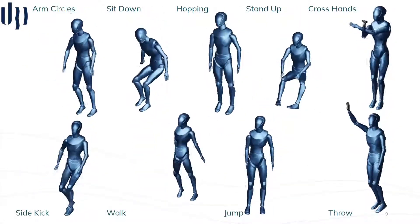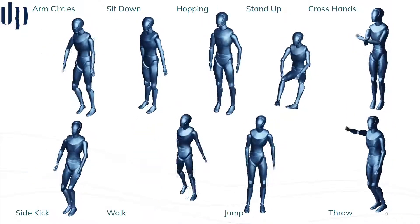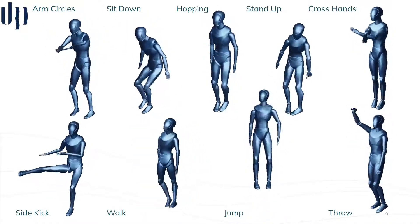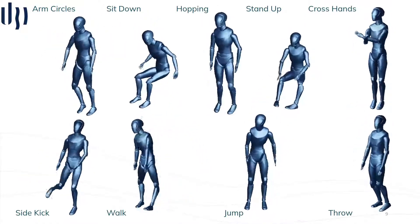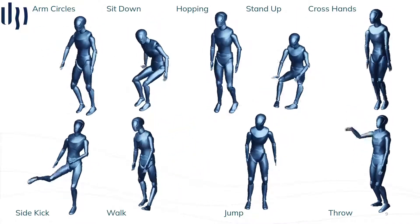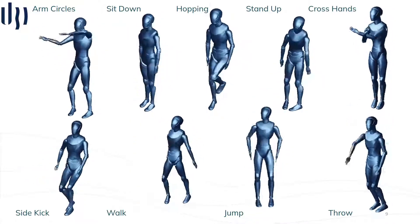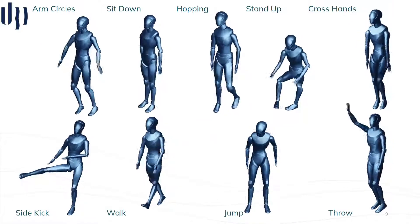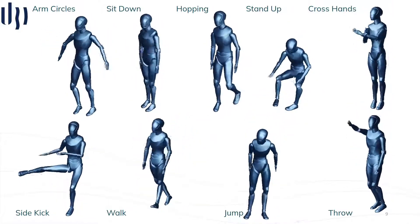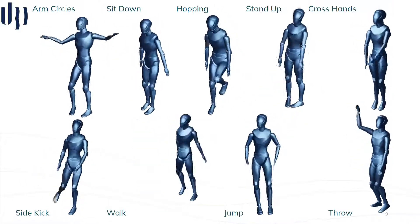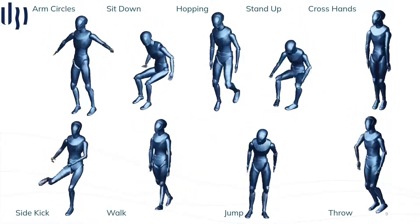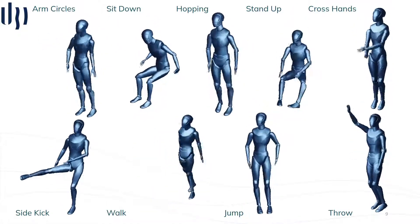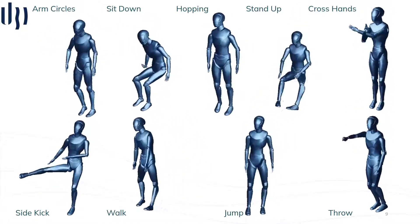Previous methods had the limitation of only generating up to 10 or 20 different actions. KineticGAN's architecture has the robustness to synthesize up to 120 different actions by generating human actions in a holistic way directly from the latent space, with increased diversity, flexibility, and better disentanglement of variation factors.